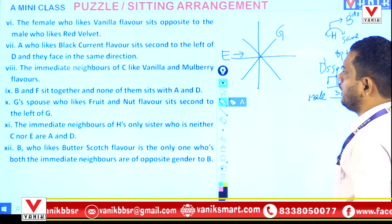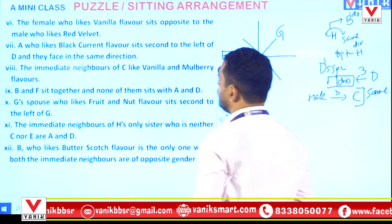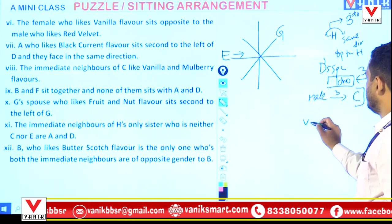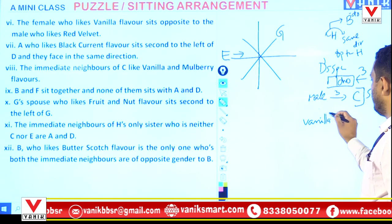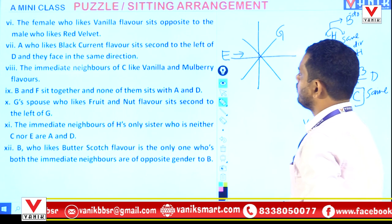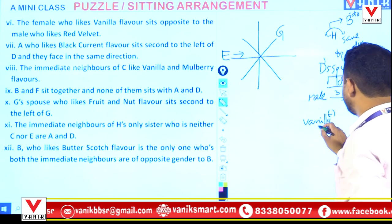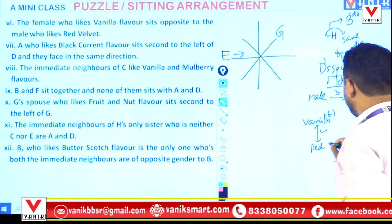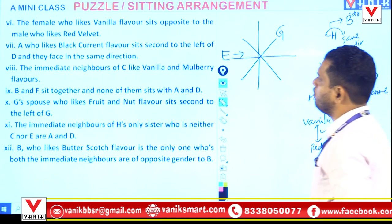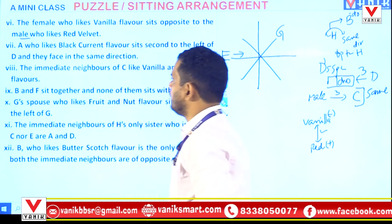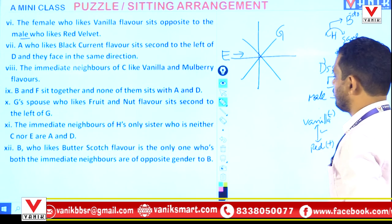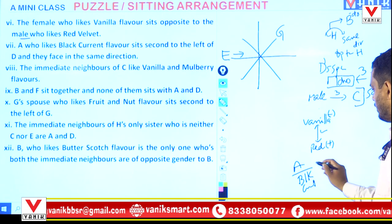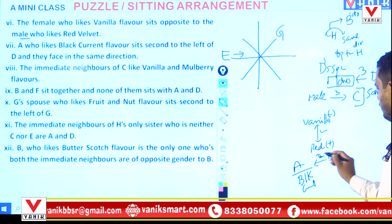Condition 6: The female who likes vanilla flavor sits opposite to the male who likes red velvet. So the vanilla person is female, and the red velvet person is male — that is clearly stated. Condition 7: A, who likes black currant flavor, sits second to the left of D, and they both face the same direction. See how complex the puzzle is getting — direction and flavor are both linked here.